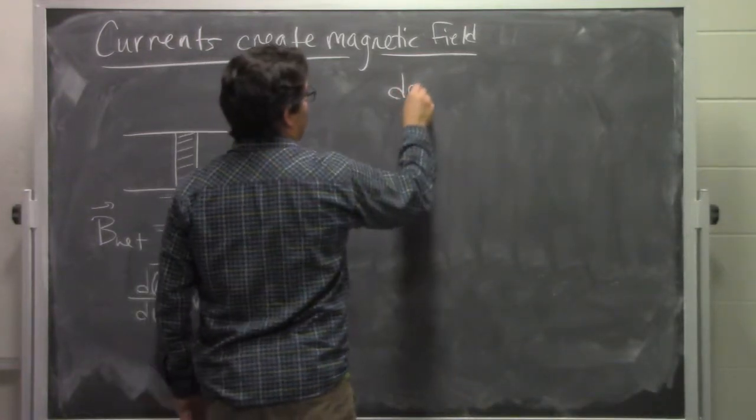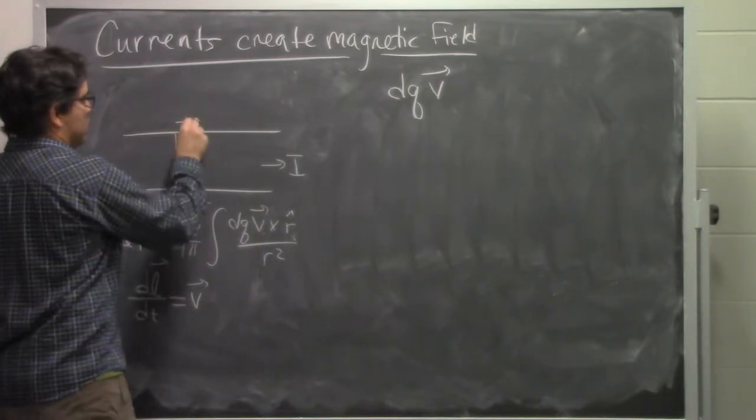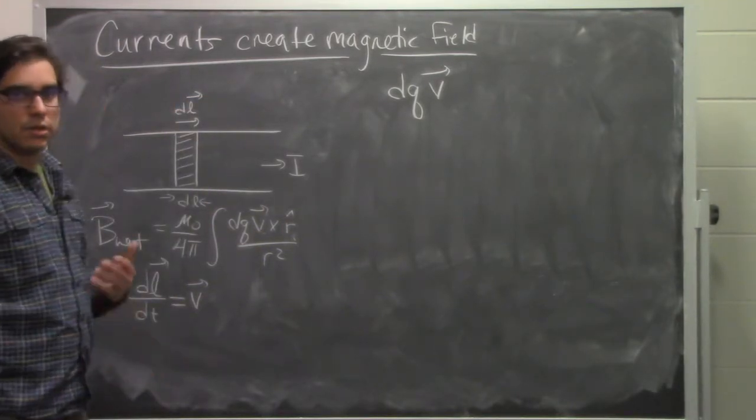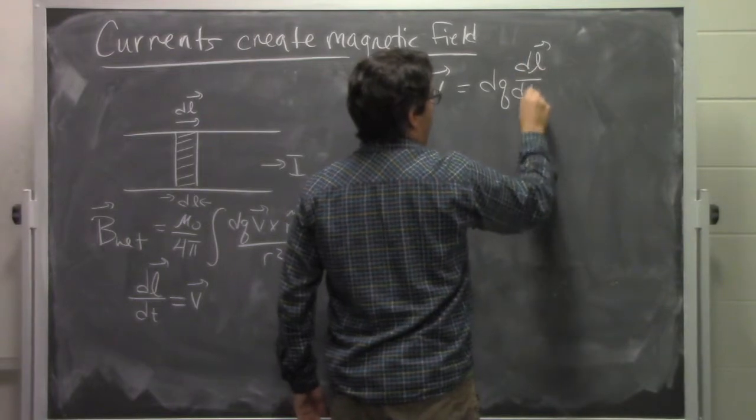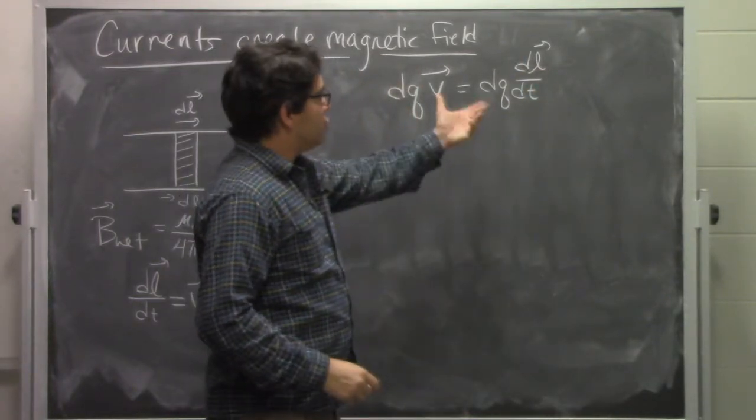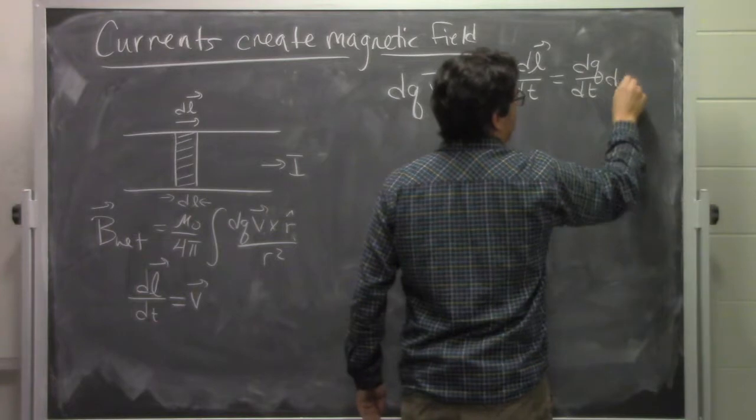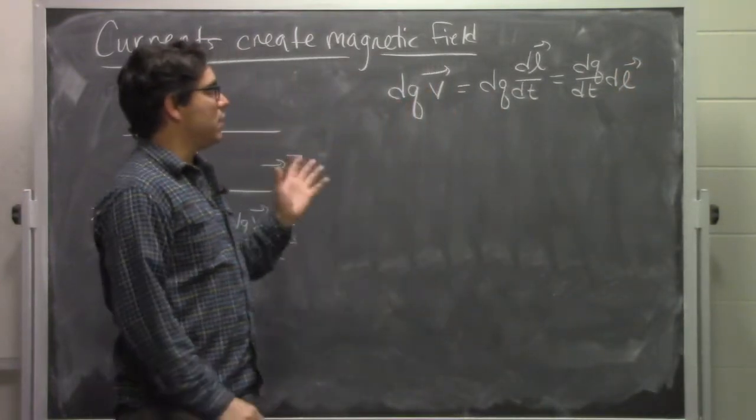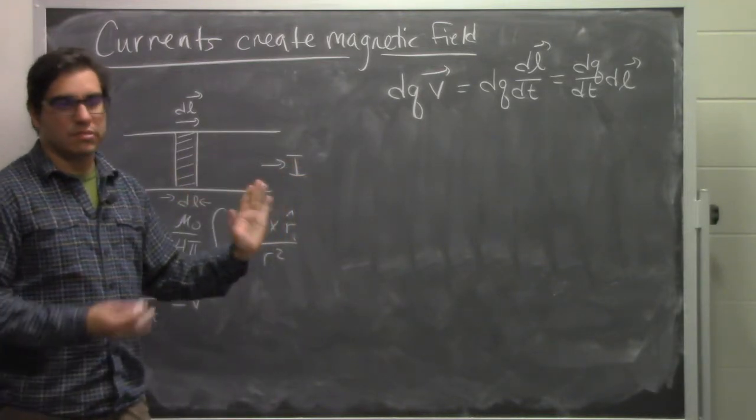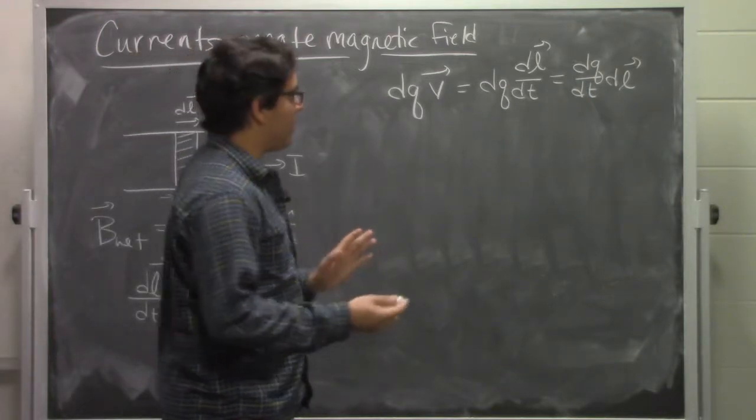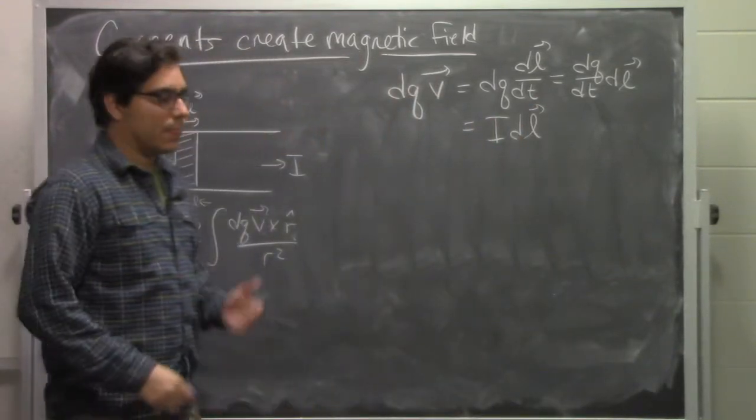The thing upstairs is DQ times V. We're suggesting that this DL is actually a vector DL that points in the direction that the current is going. We're going to have DQ times DL over DT. We can transfer the DT to the DQ. The amount of charge that moves at speed V is the same as the amount of current that goes through a distance DL. So ultimately what we end up with is the total current times DL.